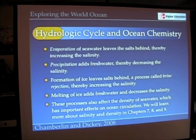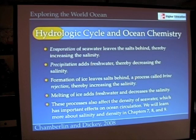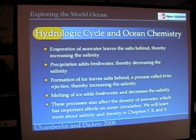Sea ice that forms actually leaves salts behind — this is called salt rejection or brine rejection — and those salts left behind increase the salinity in the region where the ice formed. The opposite occurs when ice melts, adding fresh water back to the ocean and decreasing the salinity.